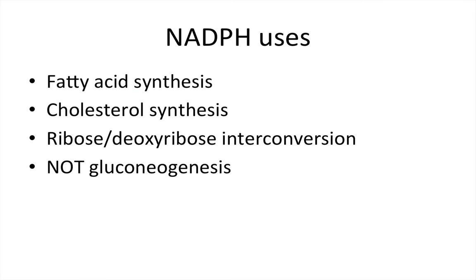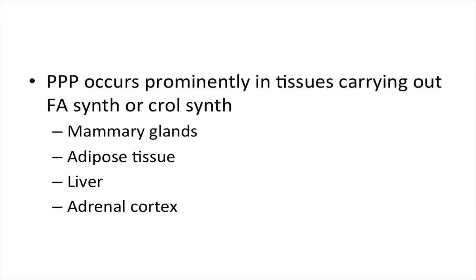You should know some of the uses for NADPH. It was a big player in fatty acid synthesis — make sure you check out that lecture. It's also used for cholesterol synthesis and ribose/deoxyribose interconversion. One thing to consider is that we're using NADPH to make things for synthesis, but we don't use it to create glucose. So we're not going to see NADPH being used in gluconeogenesis.